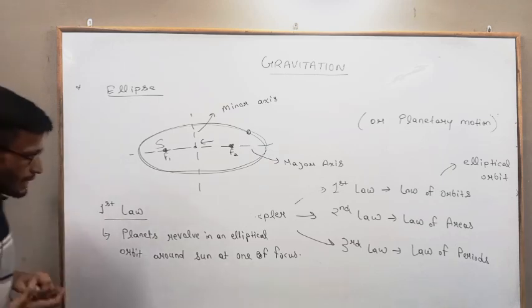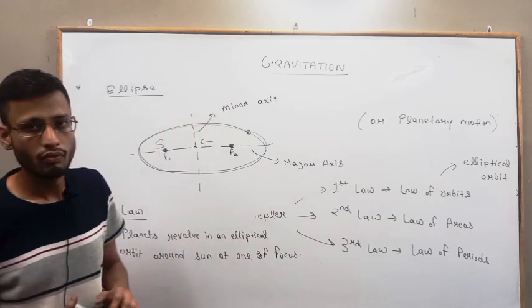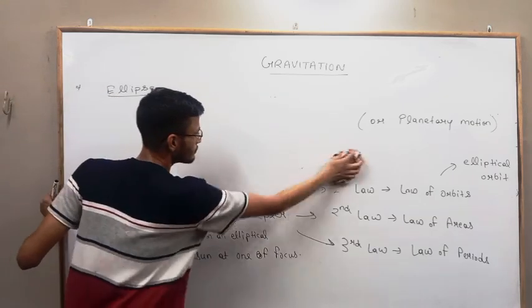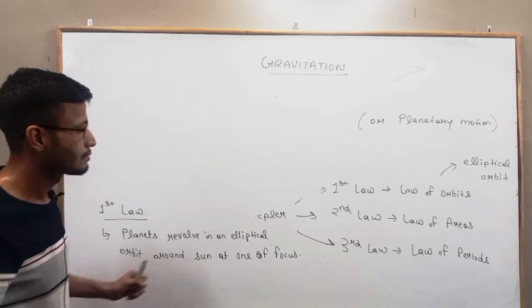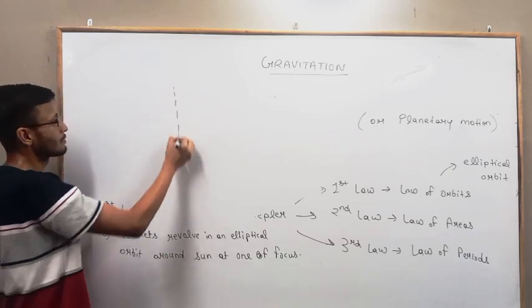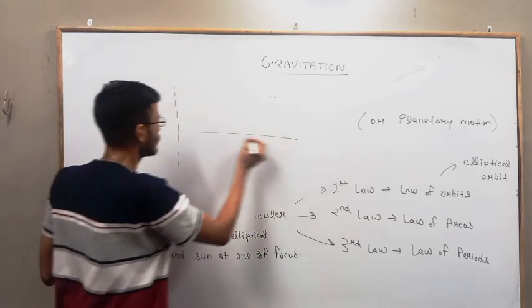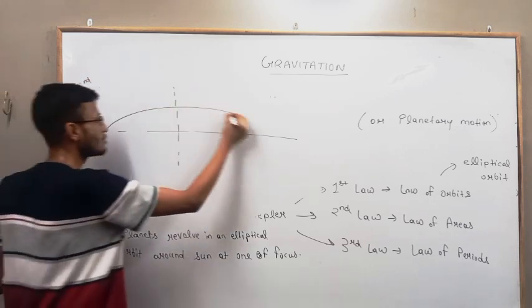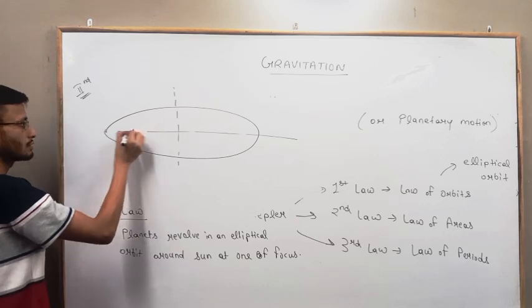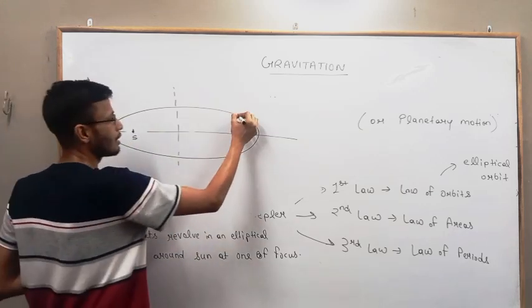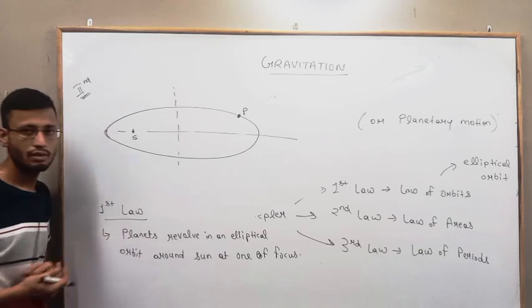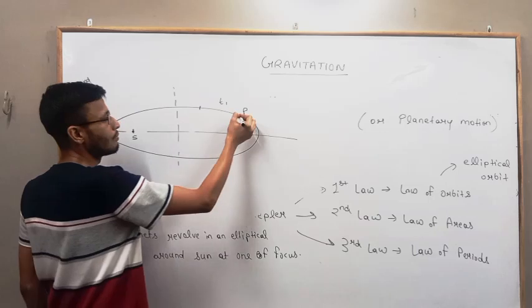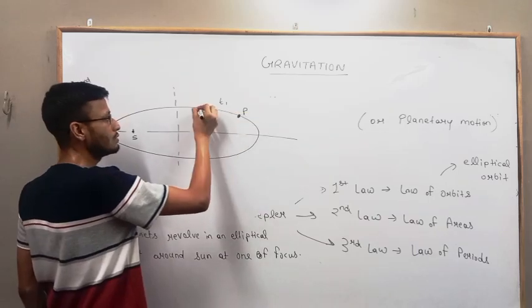Now what the second law tells - it is the law of areas. Let's discuss. Let's draw an ellipse. Let's take S for sun and this is a planet P. Say in time t1, planet moves from P to P dash.